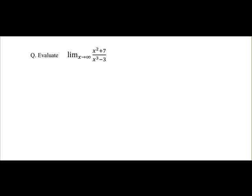With any limit, our first step is always to substitute for x with the value it is approaching. Here it is x approaching infinity, so that will give us infinity squared plus 7 over infinity cubed minus 3.